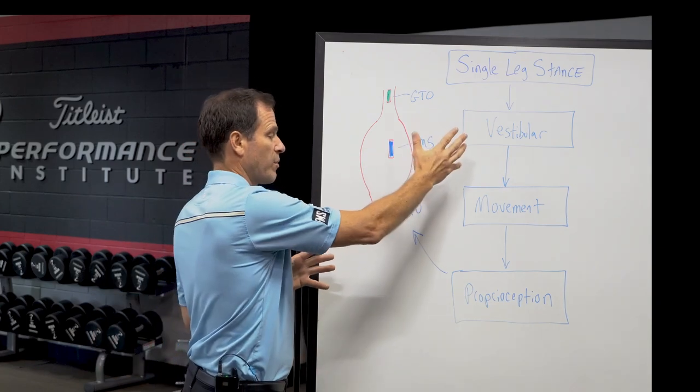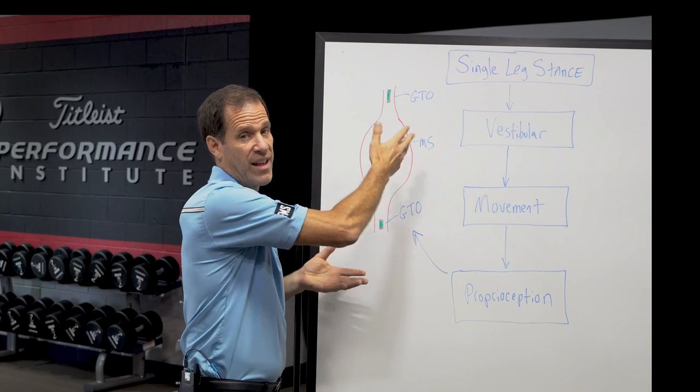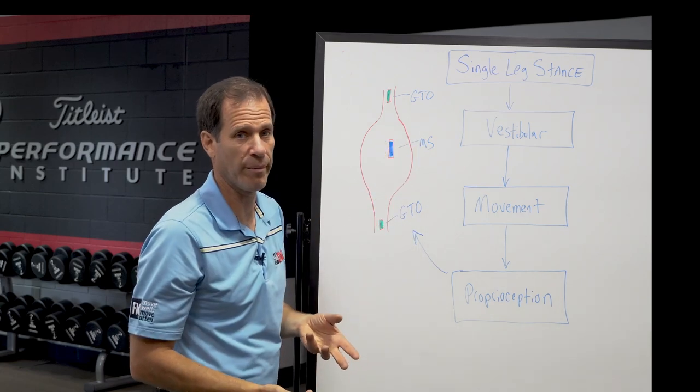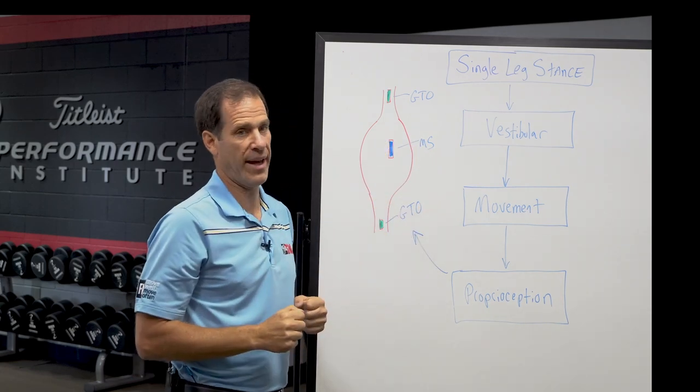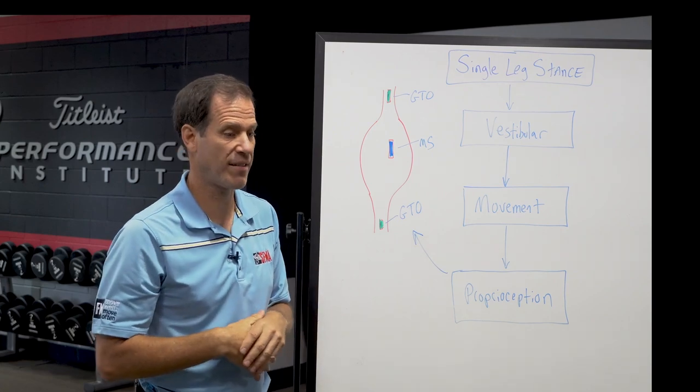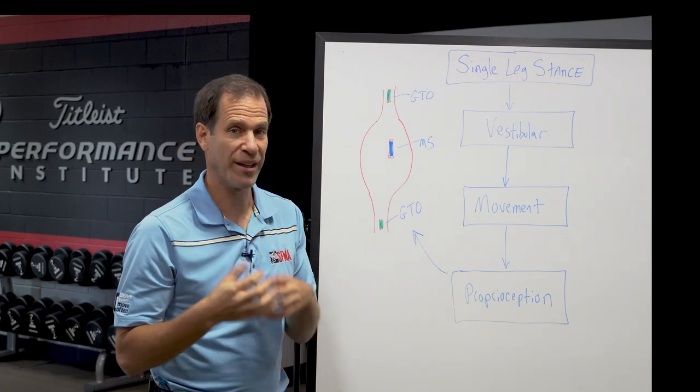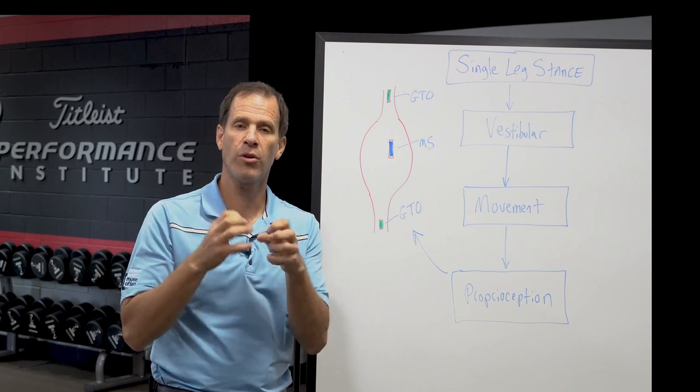Then, like I said, most places would say, well, if your balance is off, and it's not vestibular, you have a proprioception problem. But what we do is we check movement next. Now, what does that mean? We're actually going to check to see, can your ankle move? Can your hip move? Can your knee, can do your joints move?